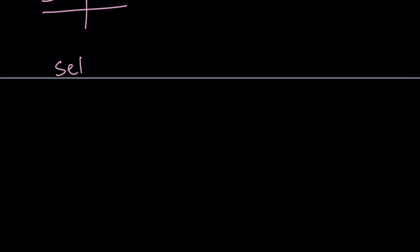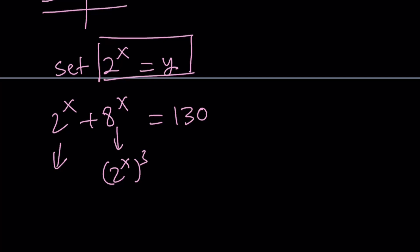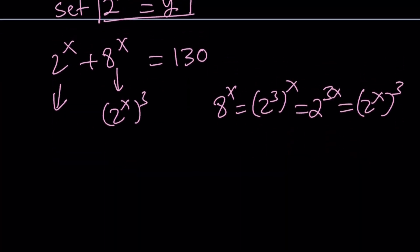So let's go ahead and set 2 to the power x equal to y. And let me rewrite the equation. We have 2 to the x plus 8 to the x equals 130. You probably guessed at this point what the x value is going to be, or the y value, because of our substitution. But let's proceed. So if you replace 2 to the power x with y, this is y, and this is 2 to the power x cubed, because 8 to the power x can basically be written as 2 to the power 3 to the power x, which is 2 to the power 3x, which is 2 to the power x to the power 3. So you can basically cube the base, and the exponent is just going to be the same. So from here, we get the following. Since we called 2 to the power x y, we get y plus y cubed equals 130.